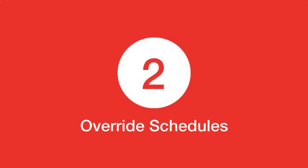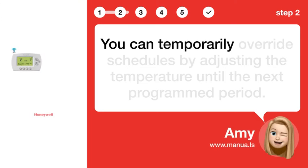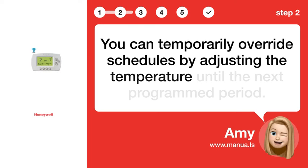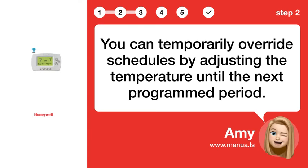Step 2: Override schedules. You can temporarily override schedules by adjusting the temperature until the next programmed period.